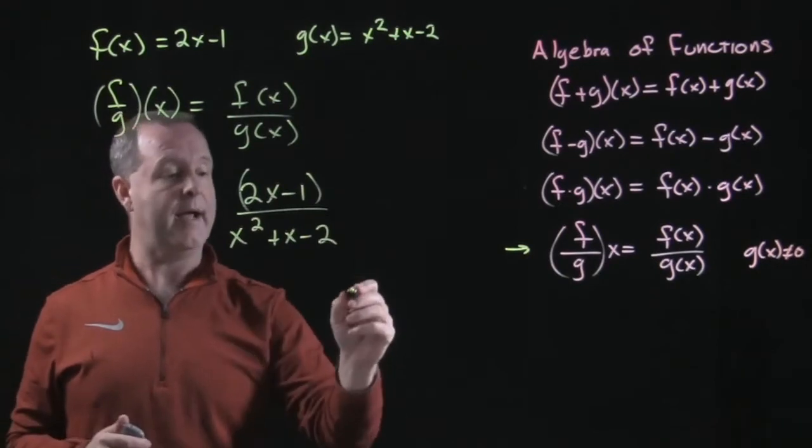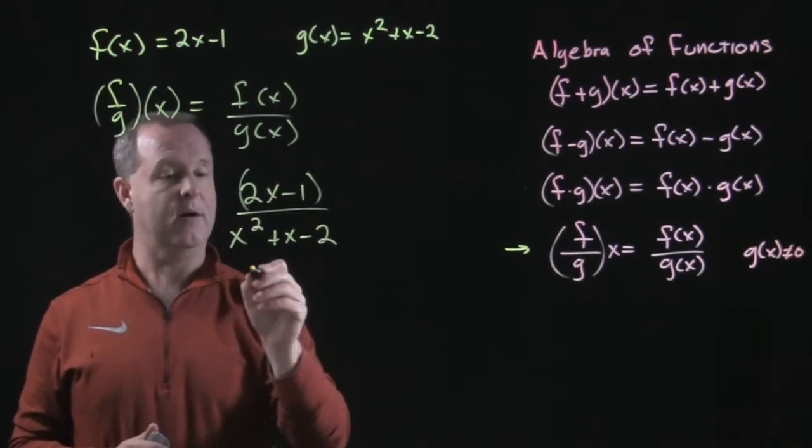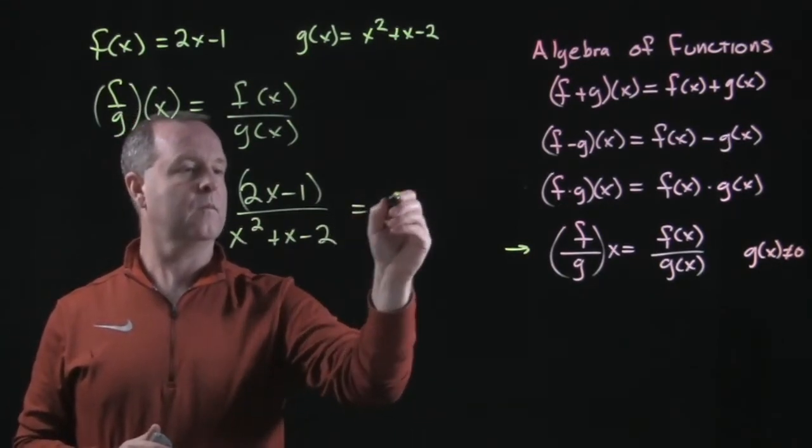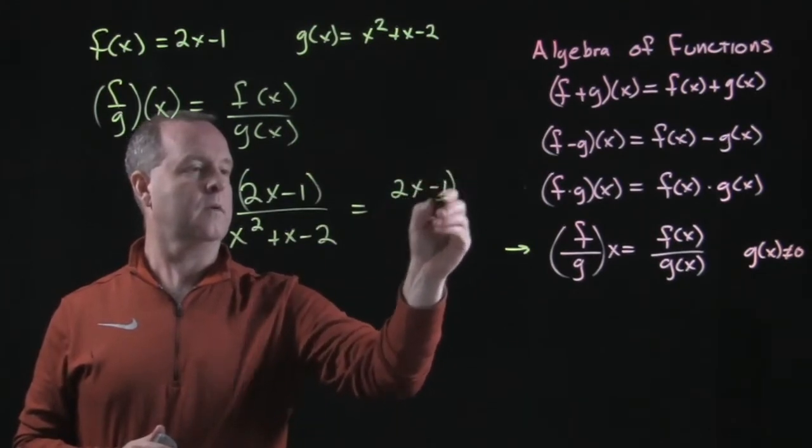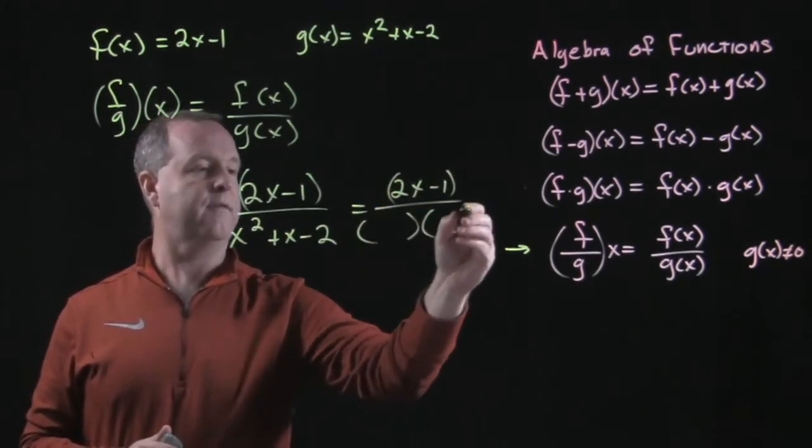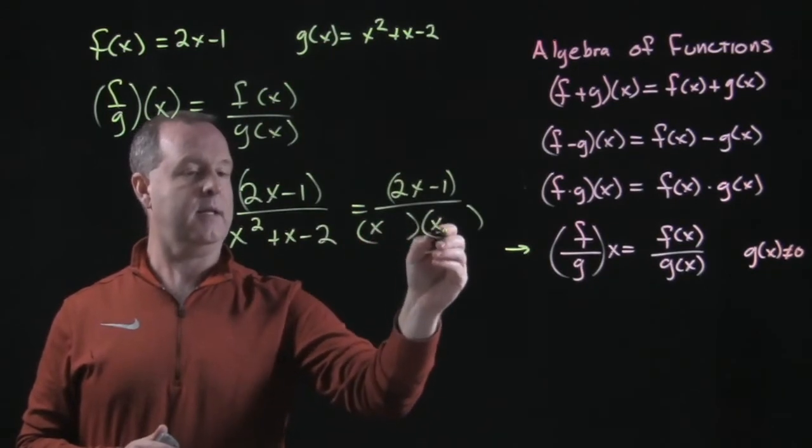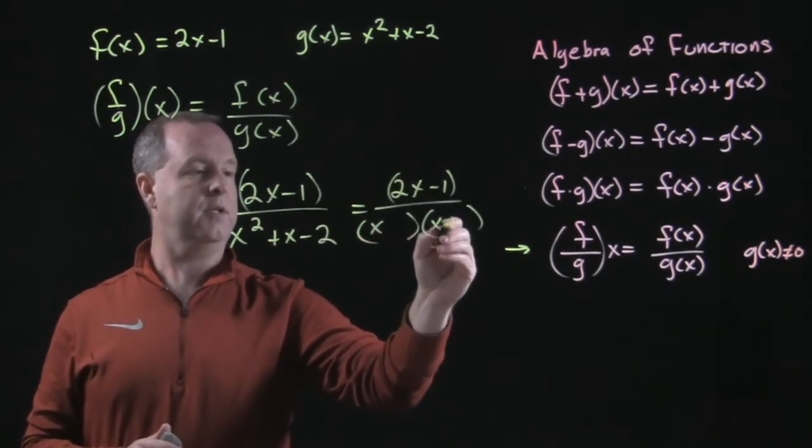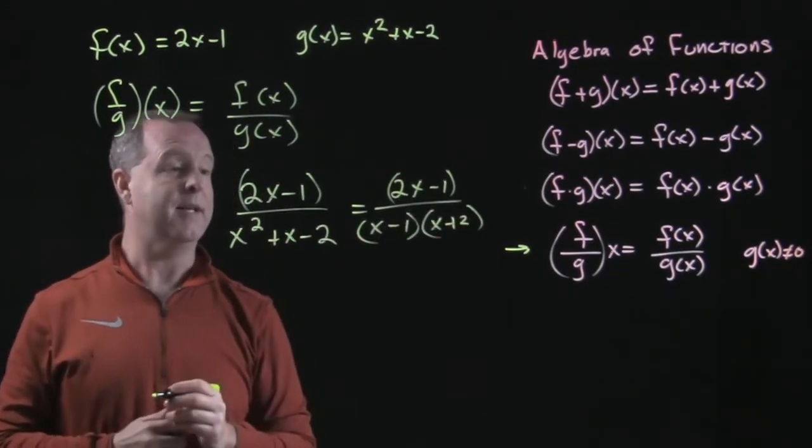Where does it equal zero at? Let's factor that down. Sometimes I'll just rewrite it, but all in factored form. That becomes x plus 2 and x minus 1.